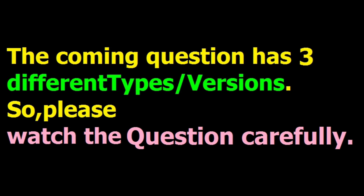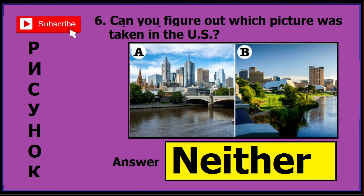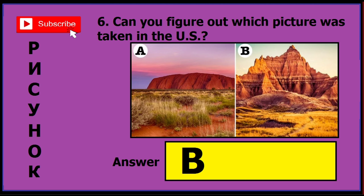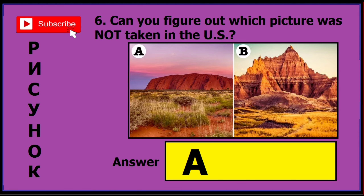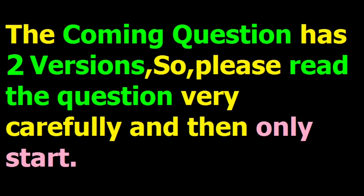This coming question also has three different versions. In version one, if you find this sort of image and question, the correct answer is 'neither' — N-E-I-T-H-E-R — so just click 'neither.' In version two, the correct answer is B. In version three, the question is the same as version two but asks 'was not taken in the US' — the negative — so the answer is A.